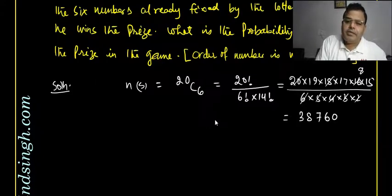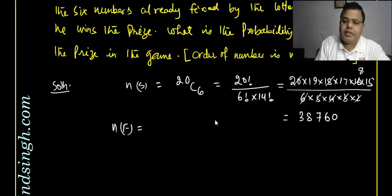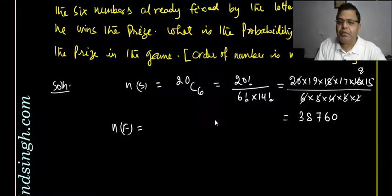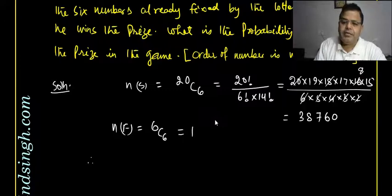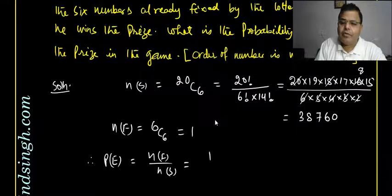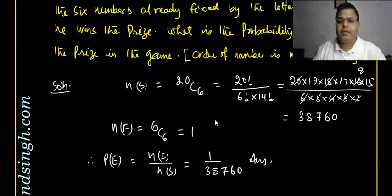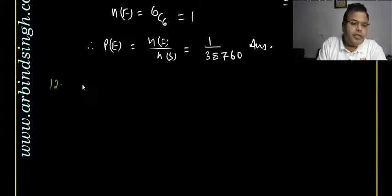The favorable case is that exactly those six numbers fixed by the lottery committee are selected, which can happen in only 1 way. Therefore, the probability of winning = NF/NS = 1/38,760. That is the answer.